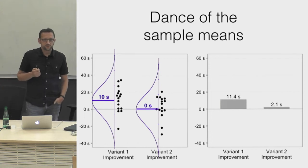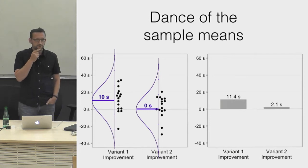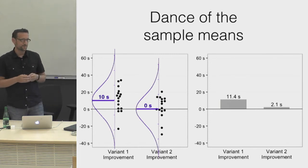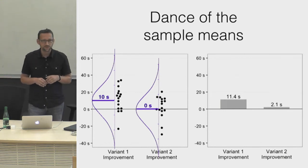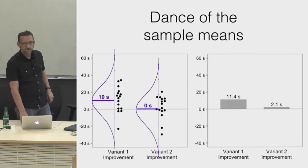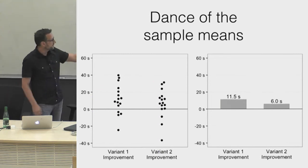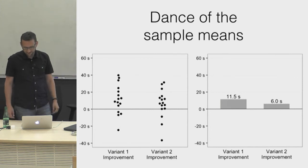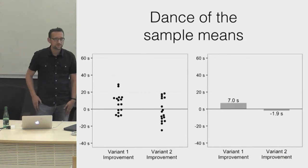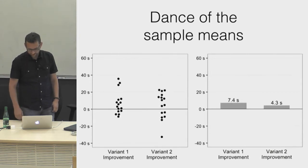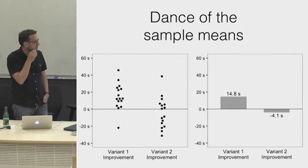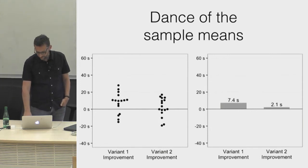To run a dance of sample means, we simulate hypothetical replications. The model is simple: dots on the left are drawn from a normal distribution centered at ten seconds, and dots on the right from one centered at zero. So variant one is truly better in the population, but variant two is the same as the baseline. We simulate replications by drawing new samples and observe that the means bounce around considerably — this is the dance of the sample means.